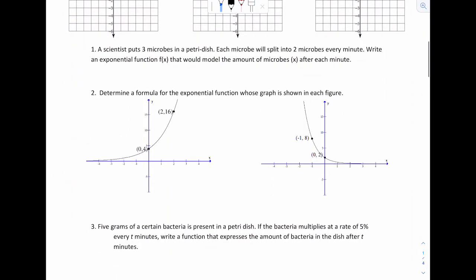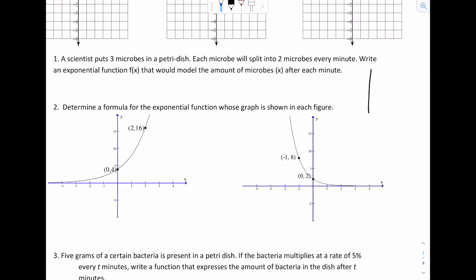Let's go to some word problems here. A scientist puts three microbes in a Petri dish. Each microbe will split into two microbes every minute. Write a function. So to understand this, it might be helpful to think of a table. X, Y. This is like saying at 0 minutes, so X is time, there should be three microbes. So that's what we're starting with. And every minute, it'll double. So at 1, it's 6. At 2, it's 12. At 3, it's 24.